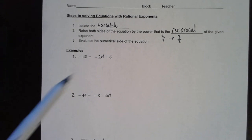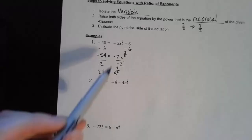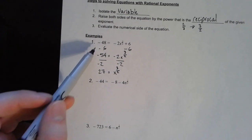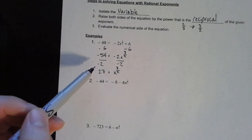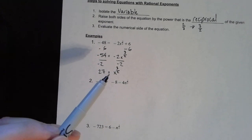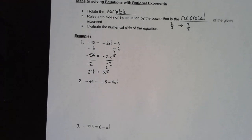I'm going to go ahead and do that now. I subtracted 6 on both sides — negative 48 minus 6 is negative 54. Then I divided both sides by negative 2. Negative 54 divided by negative 2 is 27. So I have my variable isolated; I just need to get rid of this exponent. So I need to raise both sides to the power that is the reciprocal — I need to raise both sides to the 2 thirds power.